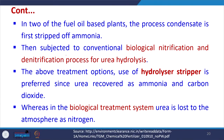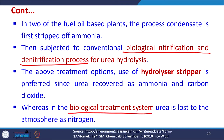The stripped process condensate contains about 2 ppm urea and 5 ppm ammonia and is reused as boiler feed water after polishing with an activated carbon filter. In two fuel-oil-based plants, the process condensate is first stripped of ammonia and then subjected to conventional biological nitrification and denitrification for urea hydrolysis. The hydrolyzer-stripper is preferred since urea is recovered as ammonia and carbon dioxide, whereas in biological treatment systems urea is lost to the atmosphere as nitrogen.